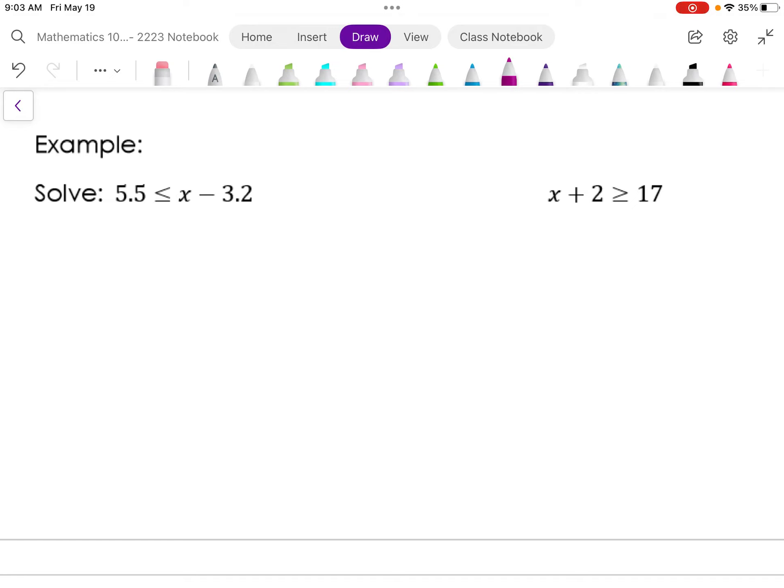So what we have here is 5.5 is less than x minus 3.2. We want to treat this exactly like an equation. I want to isolate x.